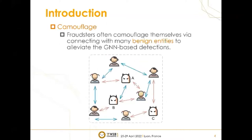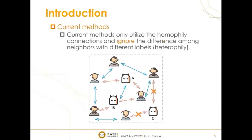However, fraudsters often camouflage themselves by connecting with many benign entities to evade the GNN-based detector. As shown in the picture below, fraudster A is not only connected with fraudster B, but also connected with two benign entities, which fool GNN-based detectors into deciding that A is benign. Current methods treat the connection between fraud and benign as noise. They only utilize the homophilic connections in fraud detection and ignore the difference among neighbors with different labels.